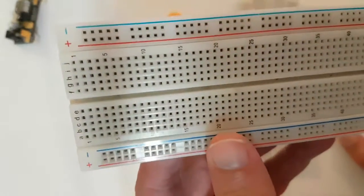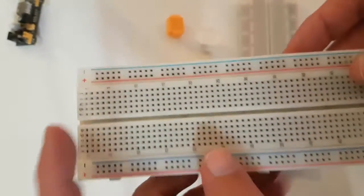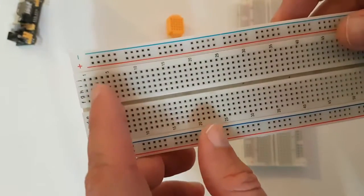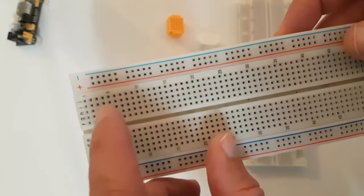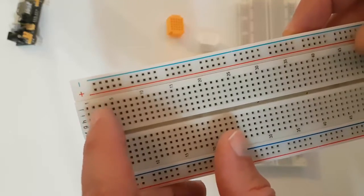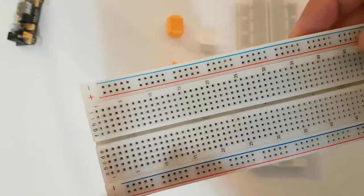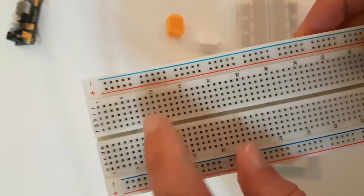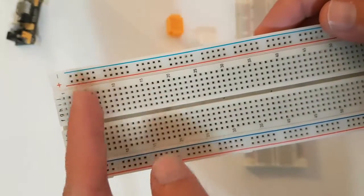The most important thing about this breadboard are the columns. As you can see, J1 is interconnected with F1, but J2 is not connected to J1 or any of these columns. The rows are separated. Only the columns are attached.